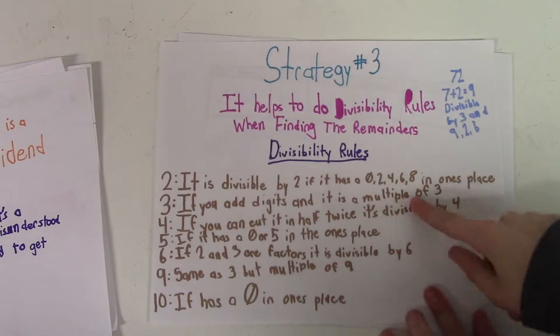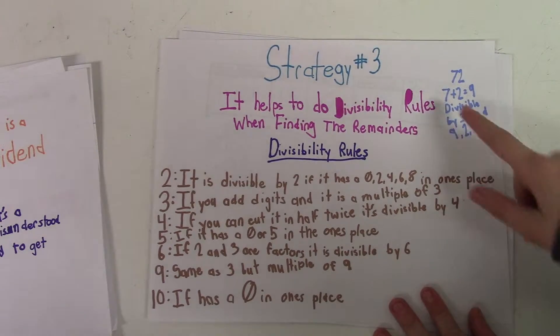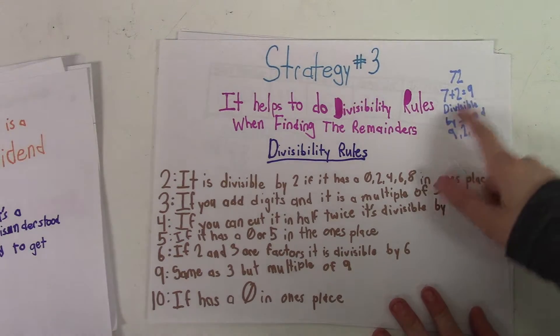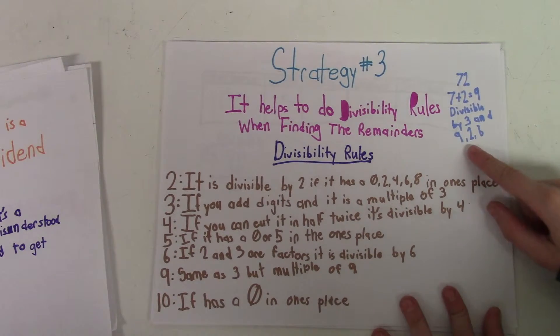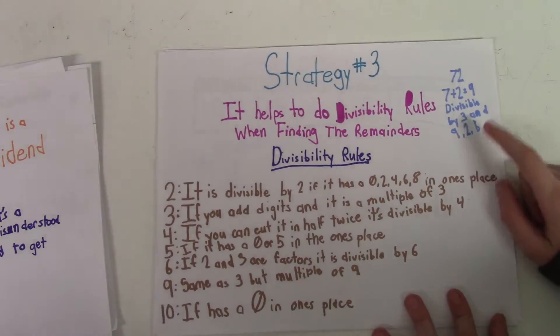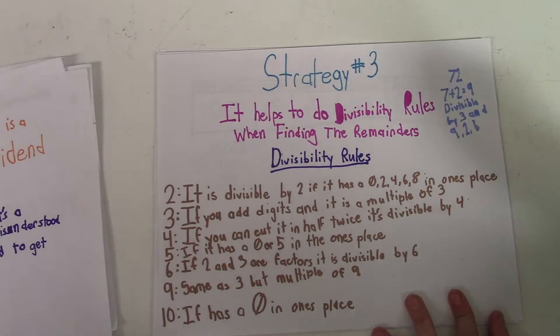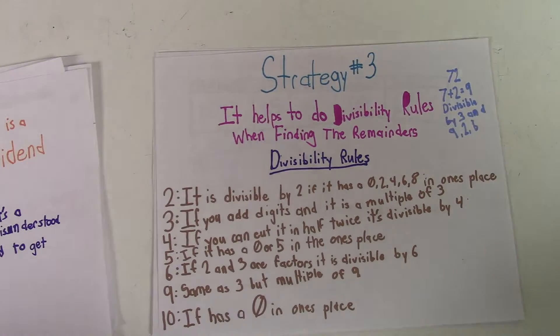So 3 and 9, they're both divisible by 3 and 9. But then you realize it has a 2 in it, so it's divisible by 2, and it has 3 and 2 as a factor. So 6 is a divisor.